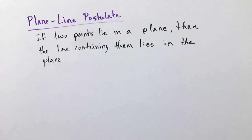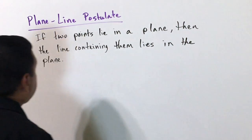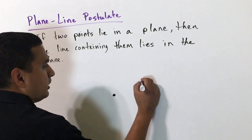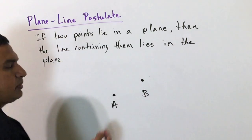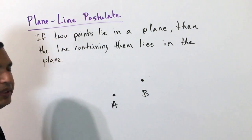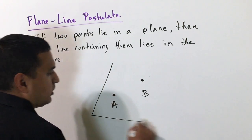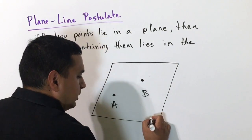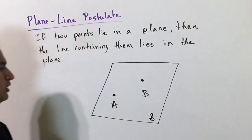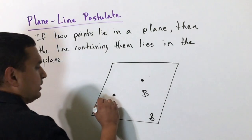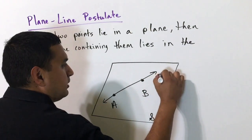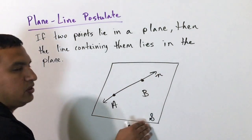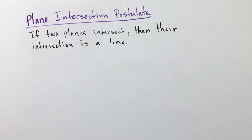The plane-line postulate says if two points lie on a plane, then the line containing those points is also on that same plane. So if I have two points — going back to A and B — there's only one way to connect them, and they also have to be in some kind of plane. If those two points are on plane S, then the line N that contains those two points also has to be in plane S, because the points are in plane S.